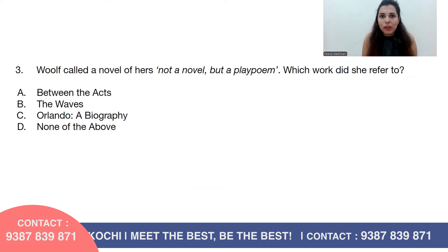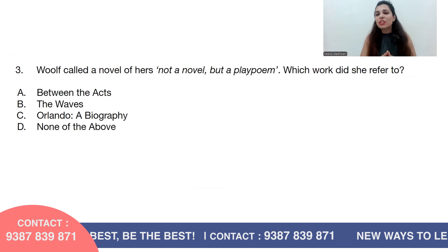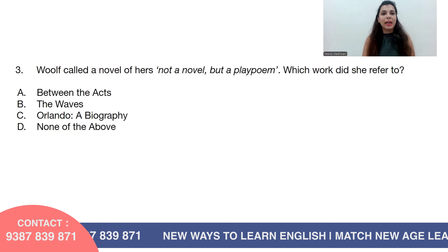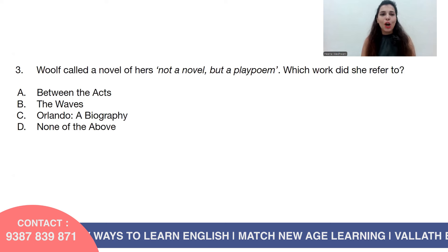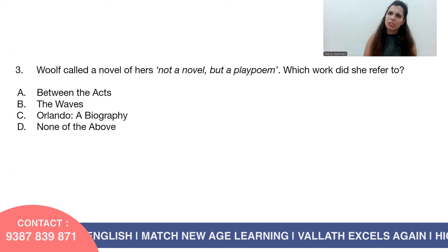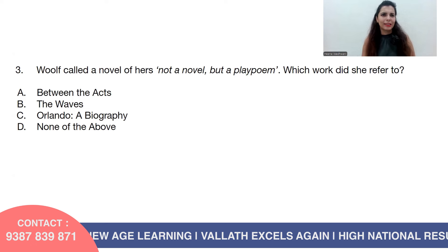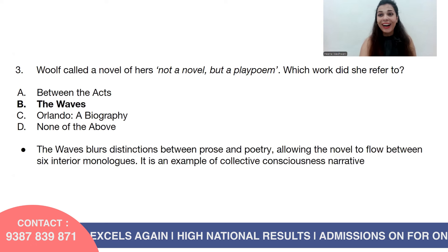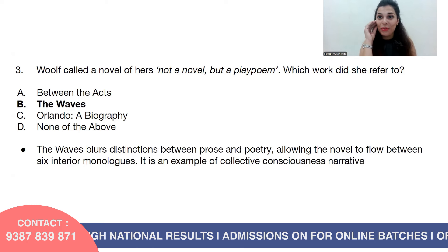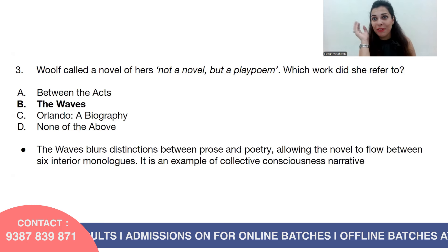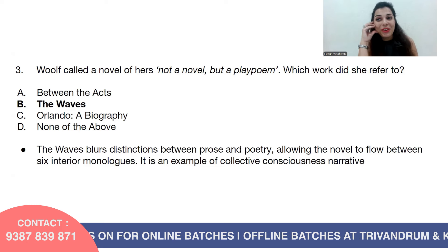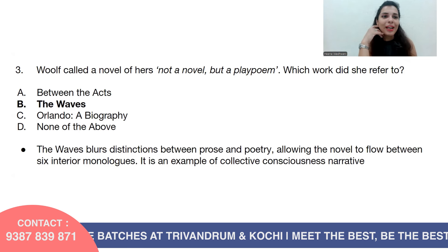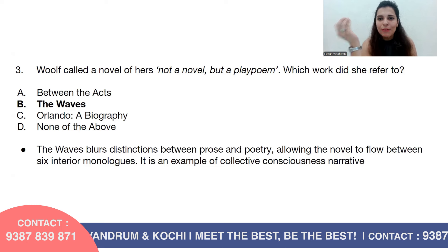Question number three: Woolf called one of her works not a novel but a 'play poem.' Which work did she refer to? Option A, Between the Acts; option B, The Waves; option C, Orlando: A Biography; or option D, none of the above. It can't be Orlando, it can't be Between the Acts. The answer is option B — The Waves.